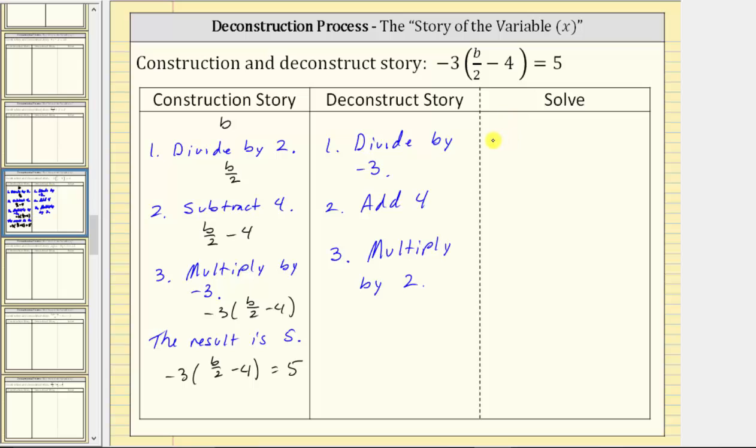So beginning with the given equation, the first step is to divide both sides by negative three. On the left, negative three divided by negative three simplifies to one. The left simplifies to B divided by two minus four. On the right, we have negative five-thirds.